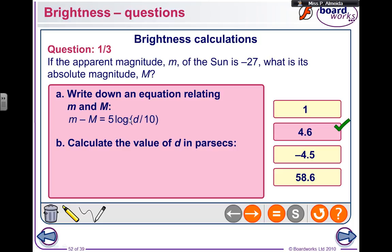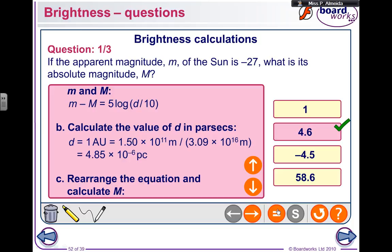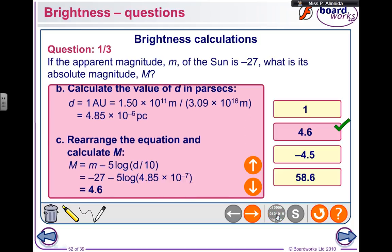So you know the distance in astronomical units. Make it into parsecs, because this formula works for parsec. Rearrange the equation and calculate big M. So I get apparent magnitude minus 5 logarithm of the distance in parsecs, 4.85 times 10 to the power of minus 6.